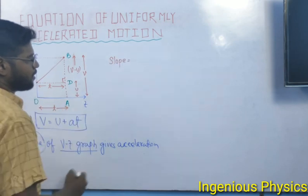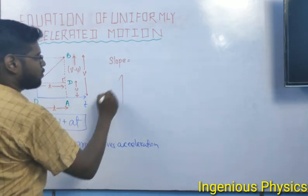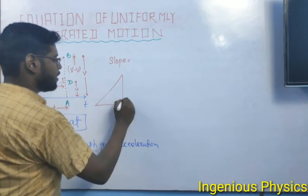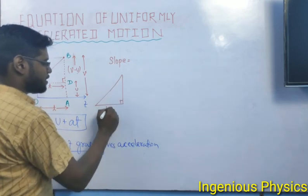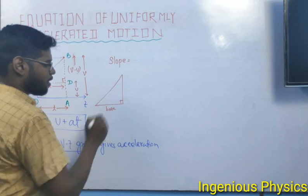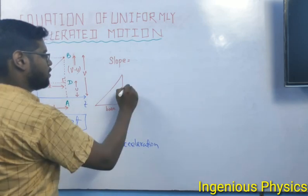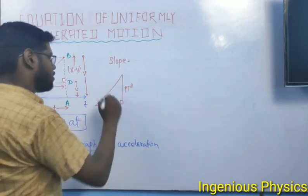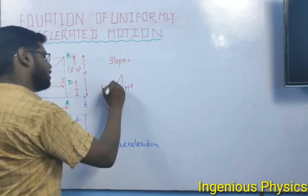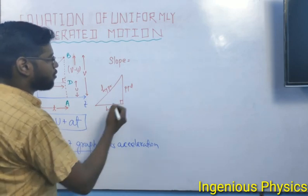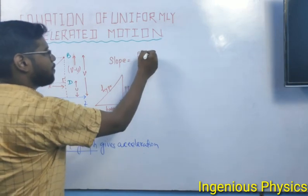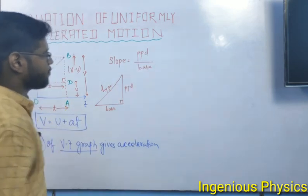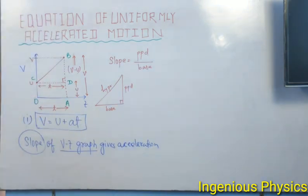Since there is a 90-degree angle, we identify the base and the perpendicular in the right-angle triangle. The slope formula is perpendicular divided by base. I hope you understand the slope concept.